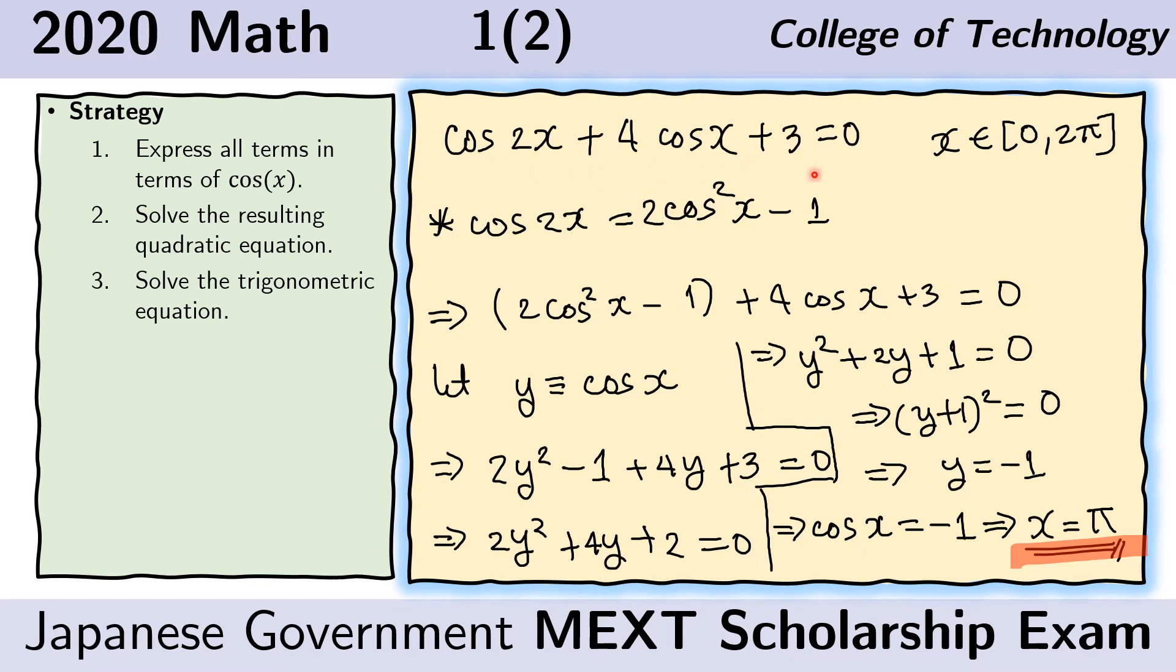Here we write down the given. This is the original given. And here we remind ourselves that we are only looking for values within 0 and 2π, so between those two values.